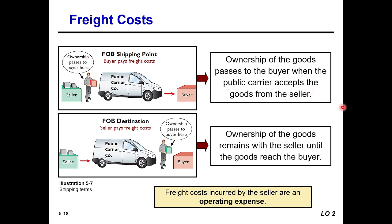Illustration 5.7 shows shipping terms. Under FOB Shipping Point, ownership of the goods passes to the buyer when the public carrier accepts the goods from the seller. Under FOB Destination, ownership remains with the seller until the goods reach the buyer — the seller is liable to deliver the goods. Freight costs incurred by the seller are an operating expense.